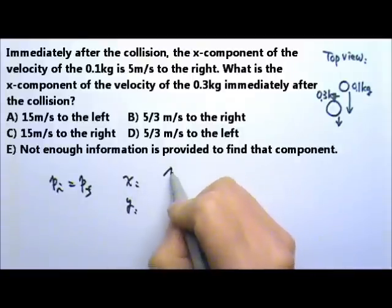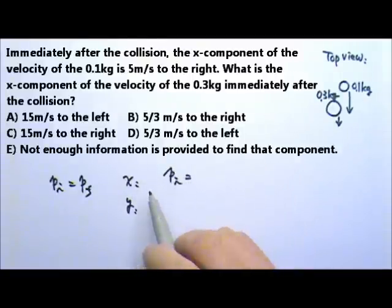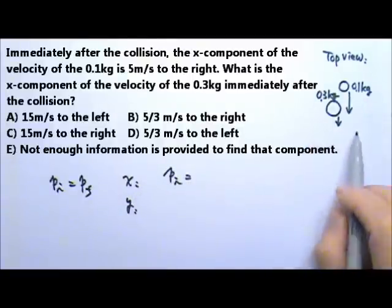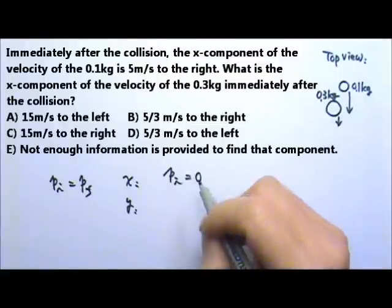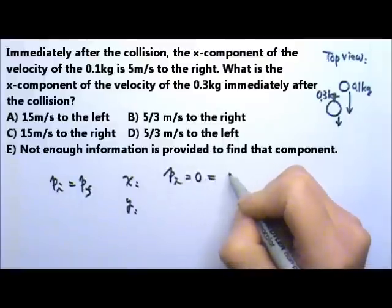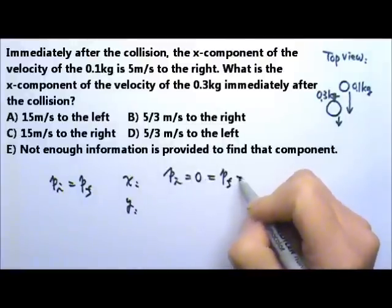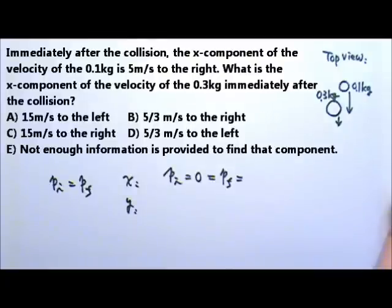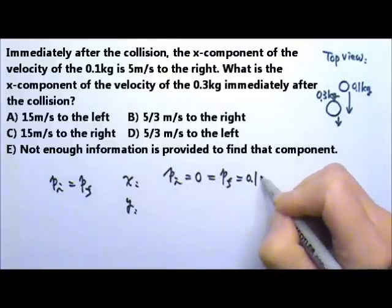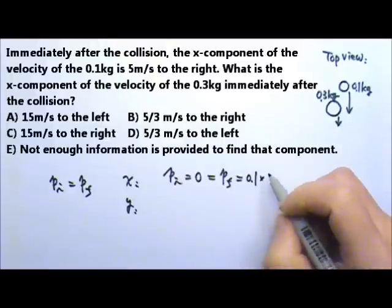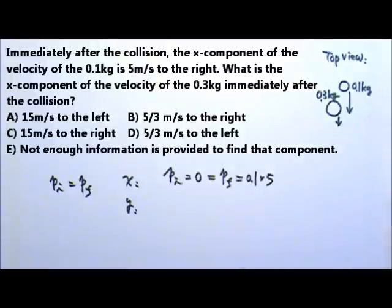Let's see. Initially, the momentum in the X direction is 0. None of these two balls have momentum in the X direction. That means the final momentum in the X direction should also be 0. We know that the 0.1 kg ball has a velocity that's 5 m per second in the X direction.